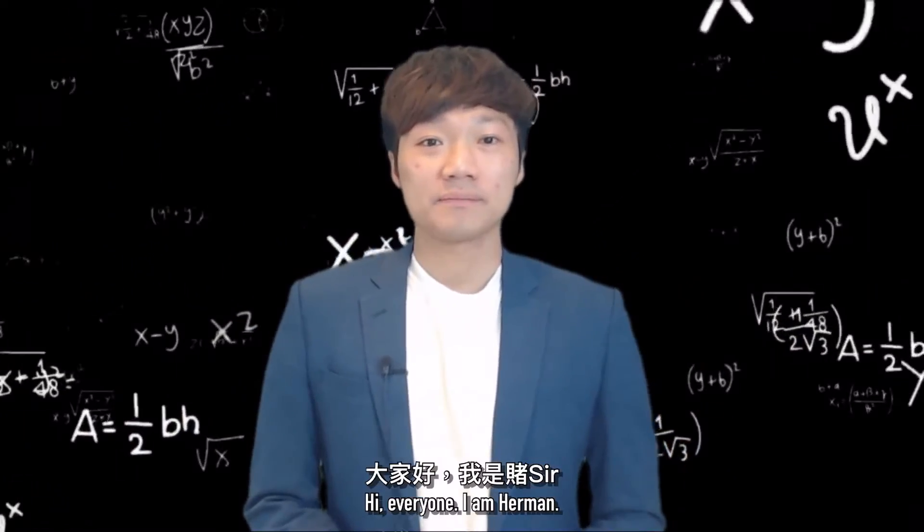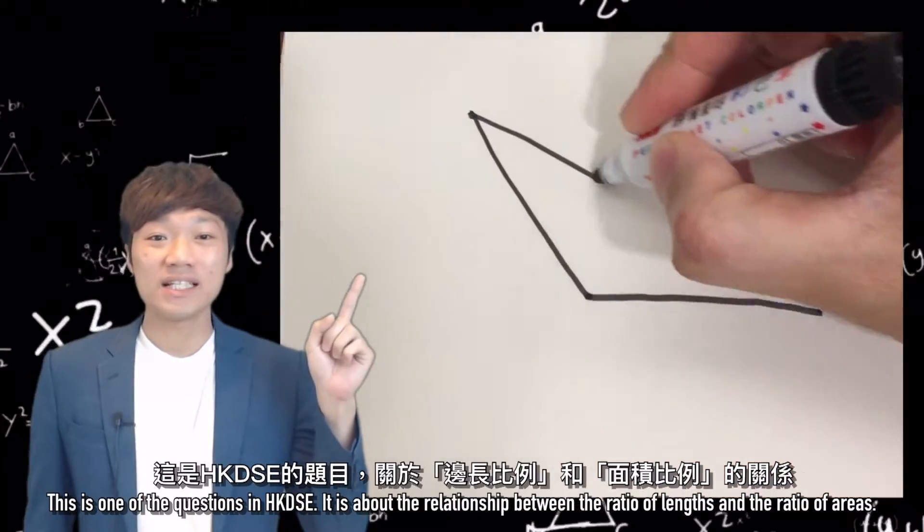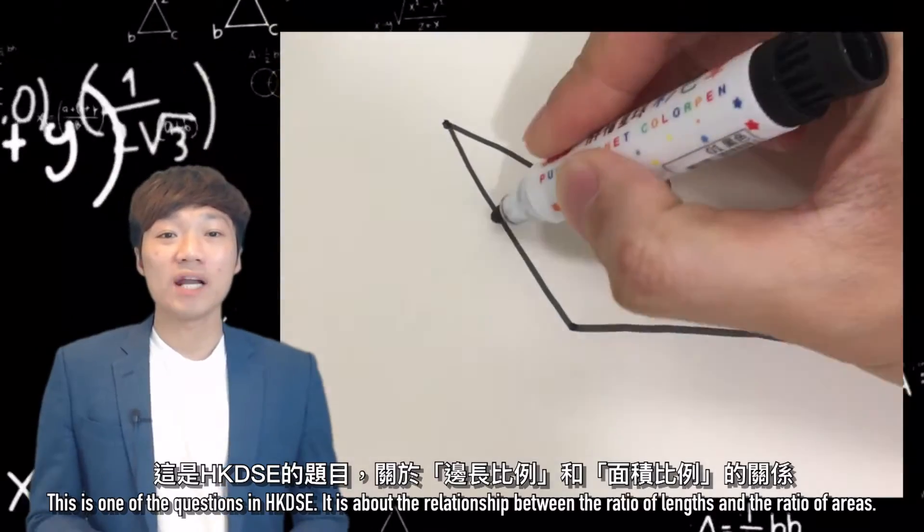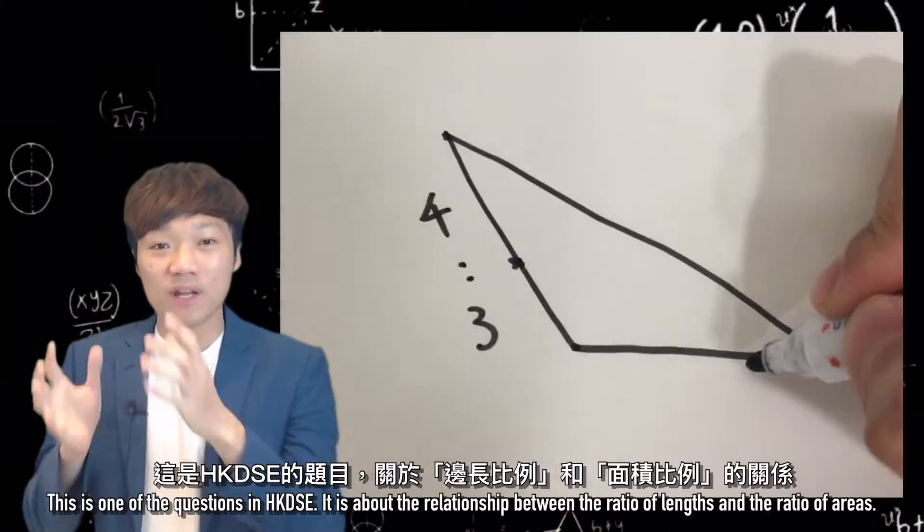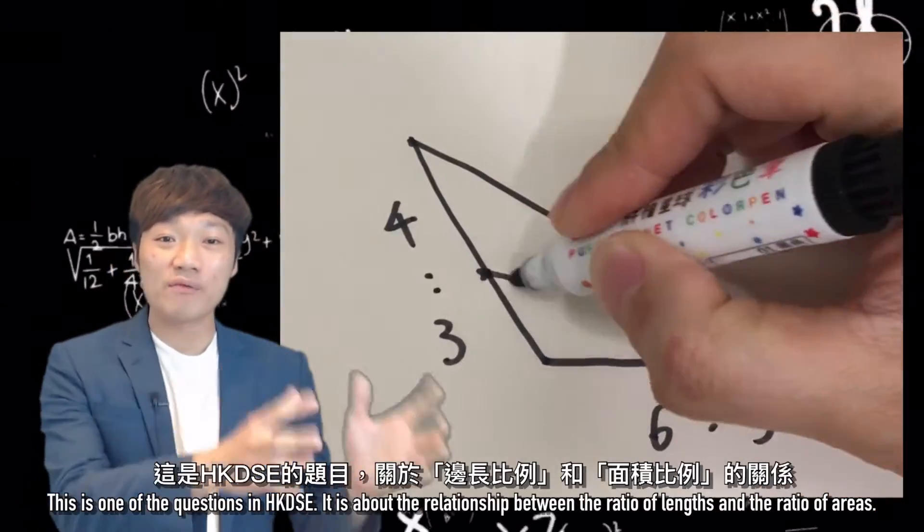Hi everyone, I'm Herman. This is one of the questions in HKDSE. It's about the relationship between the ratio of lengths and the ratio of areas.